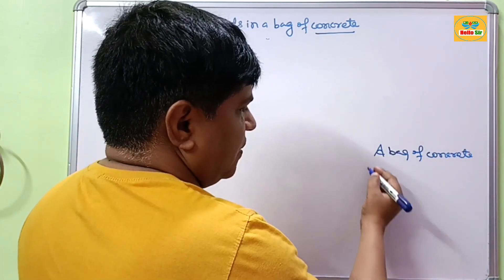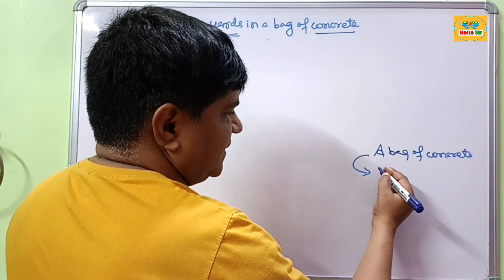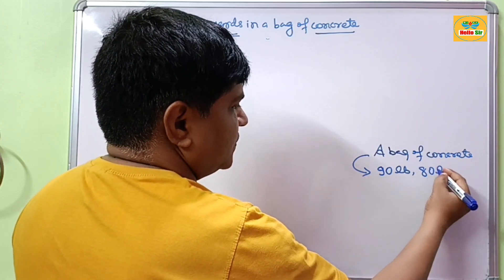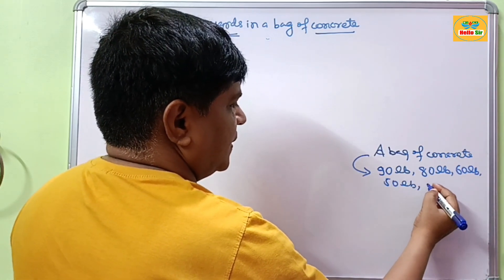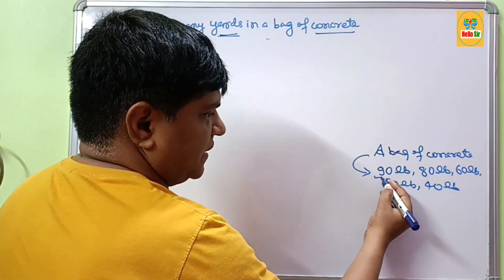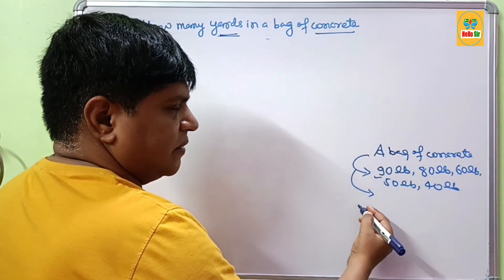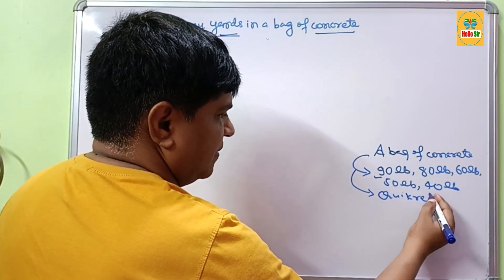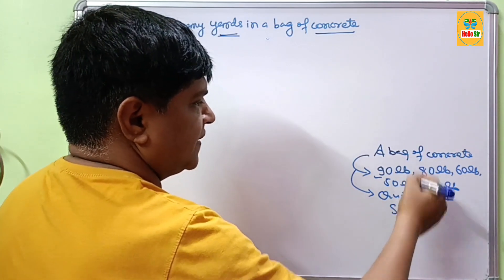The typical weight of one bag of concrete as per imperial and US standard is 90 pounds, 80 pounds, 60 pounds, 50 pounds, and 40 pounds. The main two brands of concrete bag are Quikrete and Sakrete, which manufacture these concrete bags.